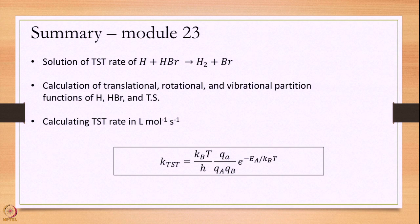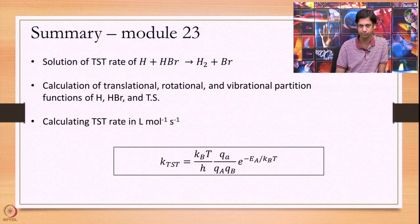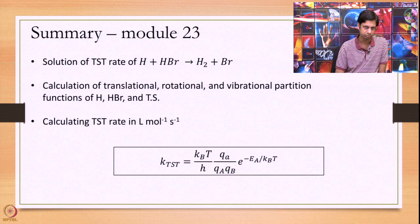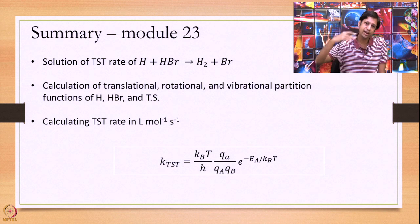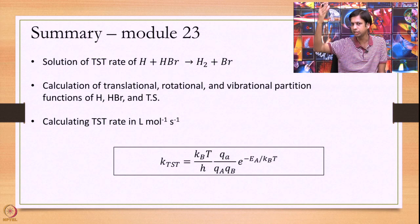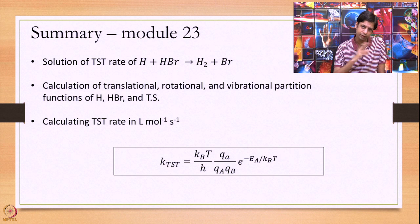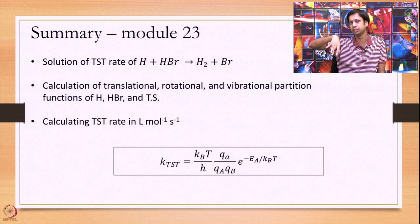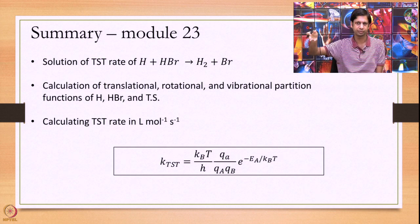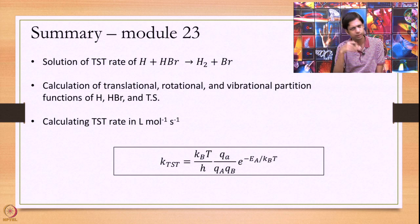We end here today. We have looked at an exact calculation for the specific example H + HBr with a linear transition state. You can use the same procedure for any reaction to get a transition state theory estimate. The first step is always identifying the parameters: figure out whether structures are linear or non-linear, calculate the appropriate moments of inertia and frequencies, always remember that for the transition state you require one frequency less, then plug into the formulas, be careful with units, and get the final answer. Thank you very much.